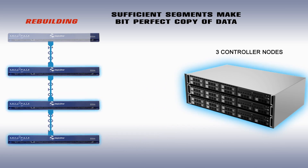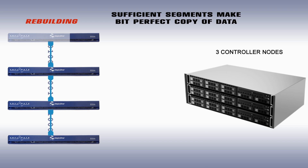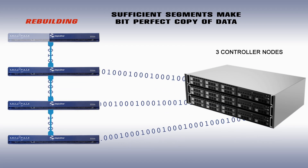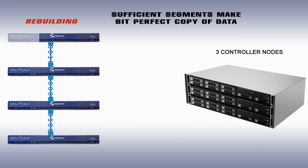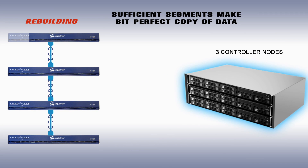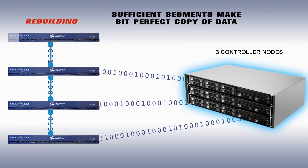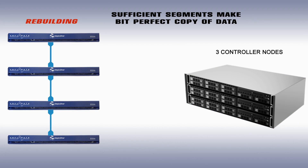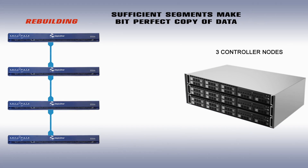What happens when a storage element — disk, node, or location — needs to be rebuilt? In a RAID system, a failed disk has to be rebuilt exactly as it was. Not so with rateless erasure codes. Only the fragments needed to restore desired redundancy are copied to a replacement or hot spare node.